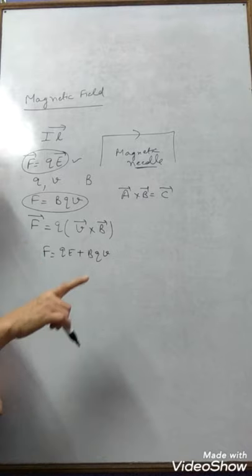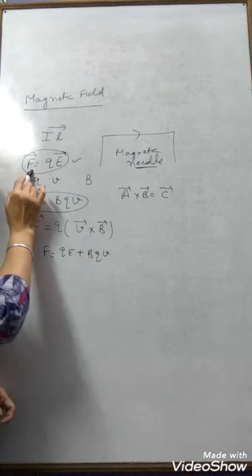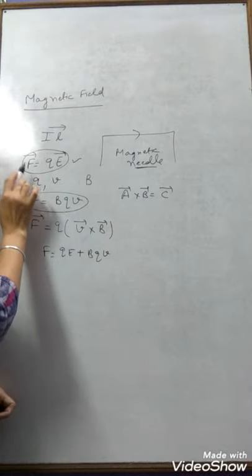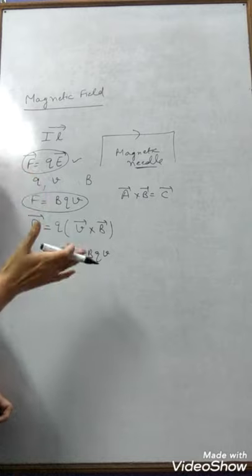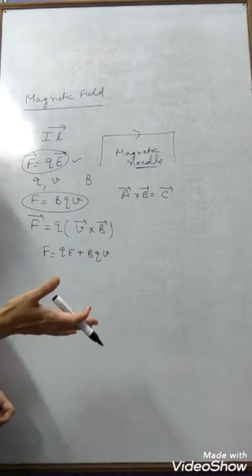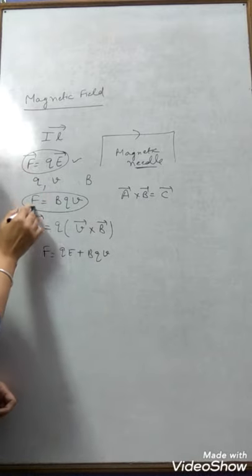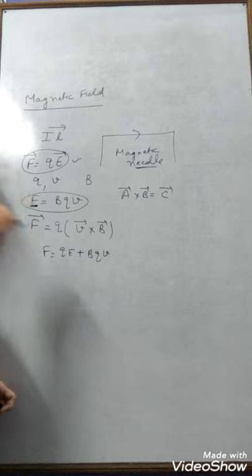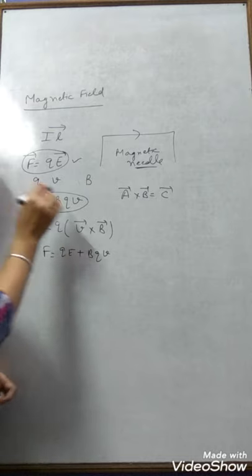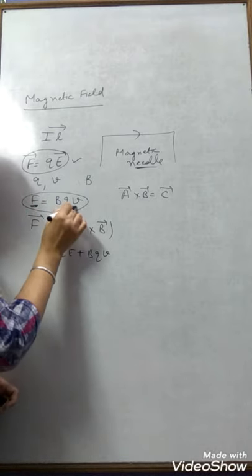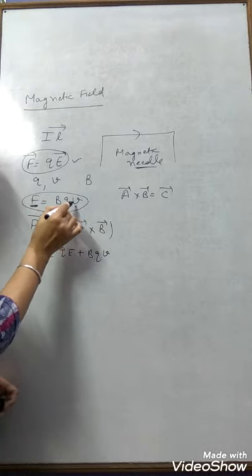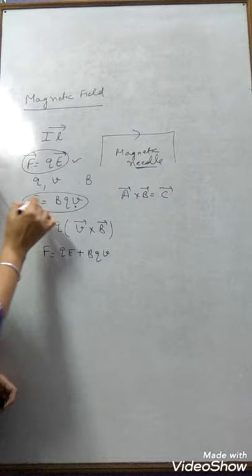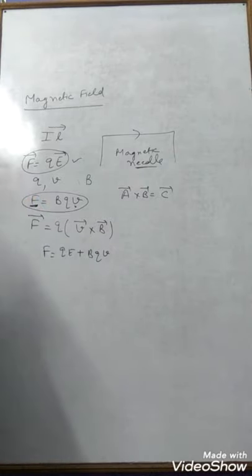The difference is that the electric field exerts force on both static and moving charges. But the magnetic field exerts force only on moving charges, because if the velocity is zero, then no force will be exerted on that charge in the magnetic field.